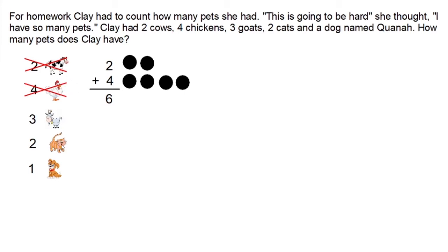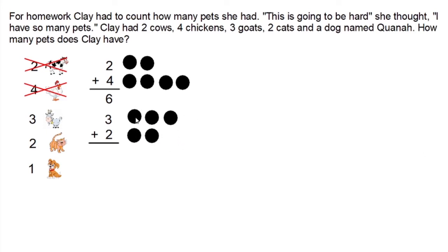Now let's see how many goats and cats Clay has. The problem tells us Clay has three goats and two cats. Using the draw a picture strategy, I see that Clay has one, two, three, four, five goats and cats combined. We've included the goats and we've included the cats. So we know that Clay has a total of six cows and chickens, and a total of five goats and cats. Now let's total the cows, chickens, goats, and cats by taking the six and adding it to the five.